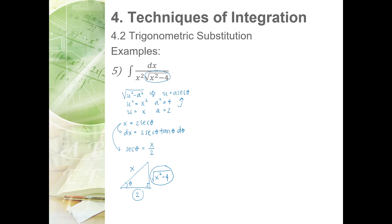Isolating: secant theta equals x over 2. Drawing the triangle — secant is hypotenuse over adjacent, so hypotenuse is x and adjacent is 2. The other leg is the square root of x squared minus 4. Pairing radical with constant using tangent: tangent theta equals the square root of x squared minus 4 over 2, so 2 tangent theta equals the square root of x squared minus 4.